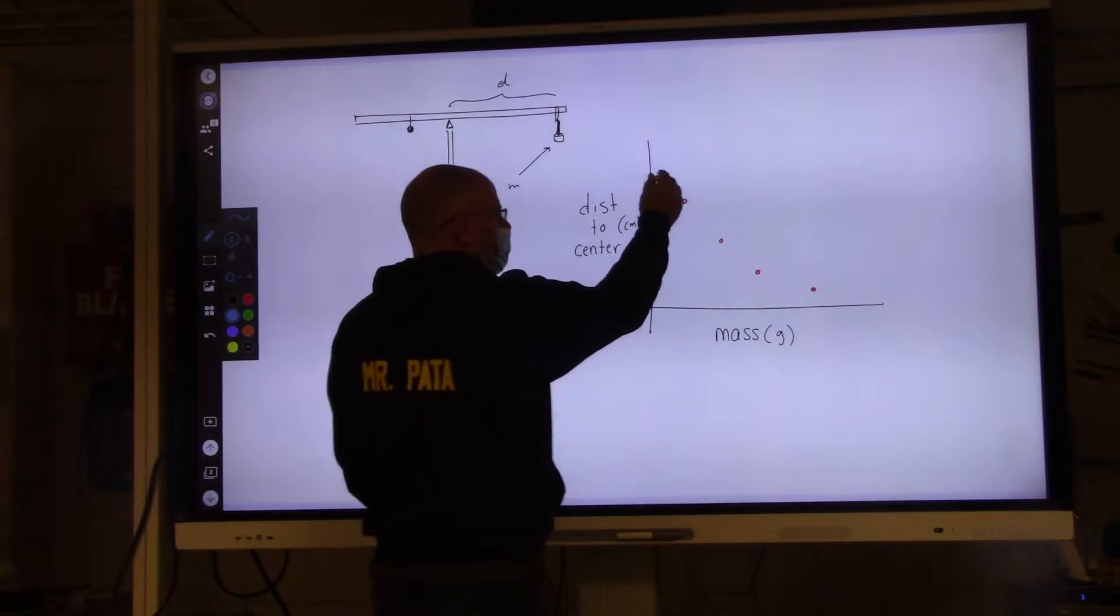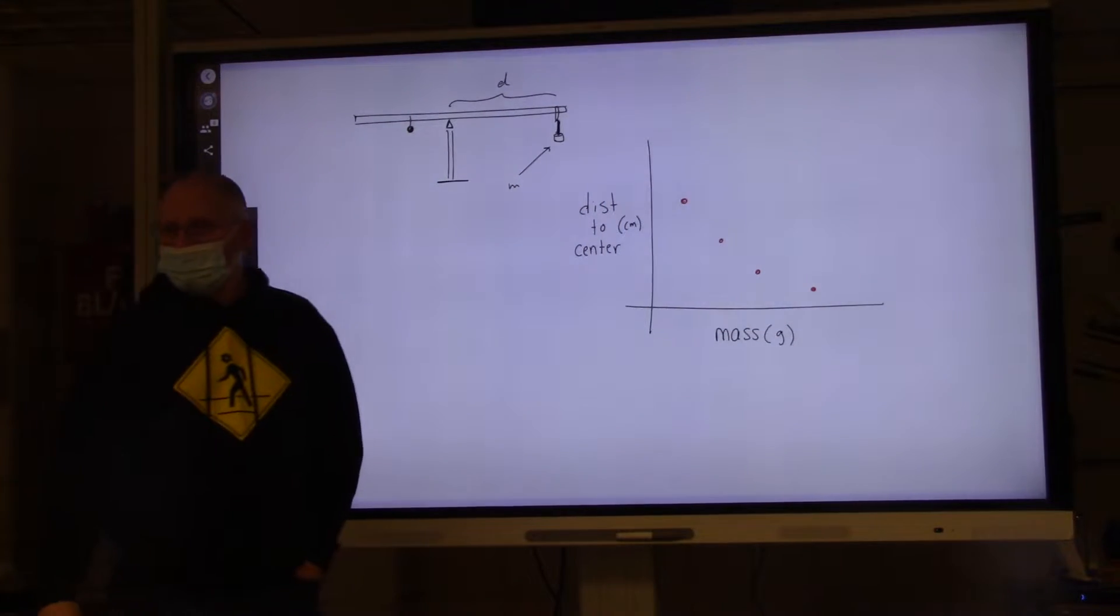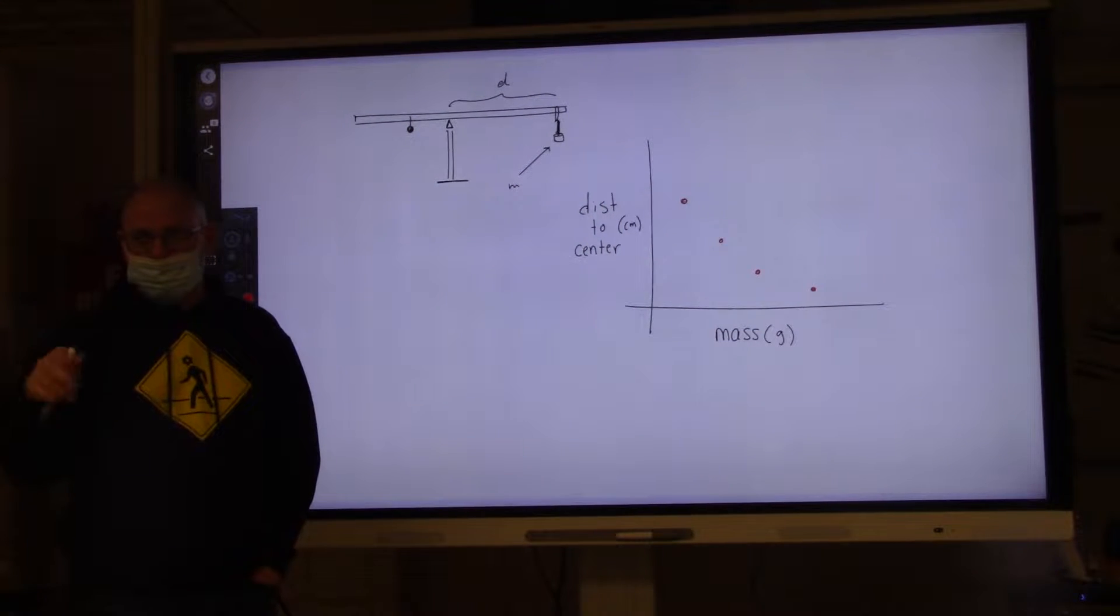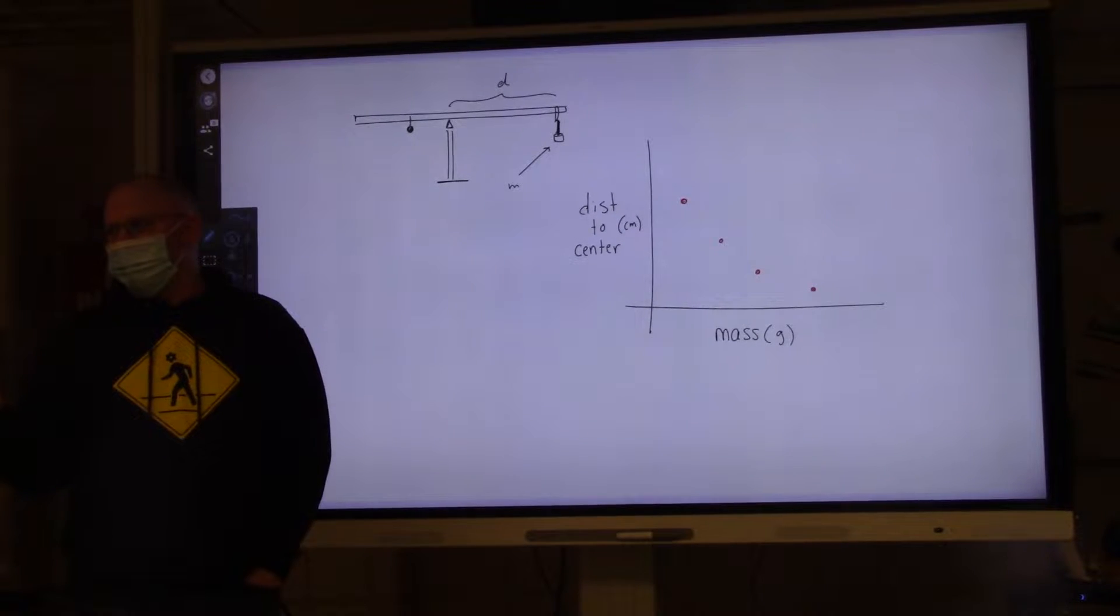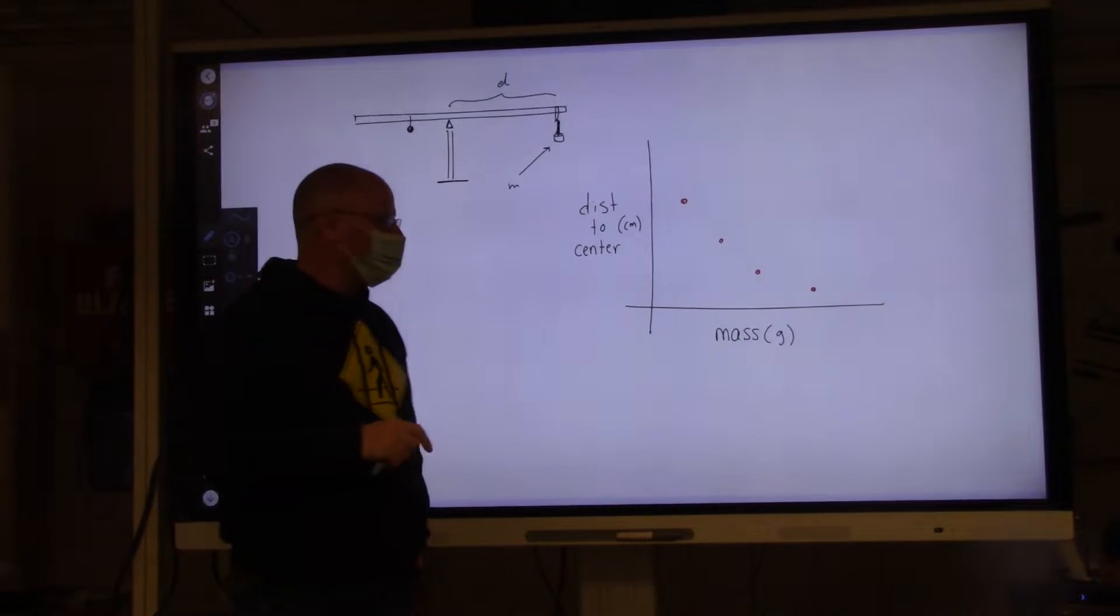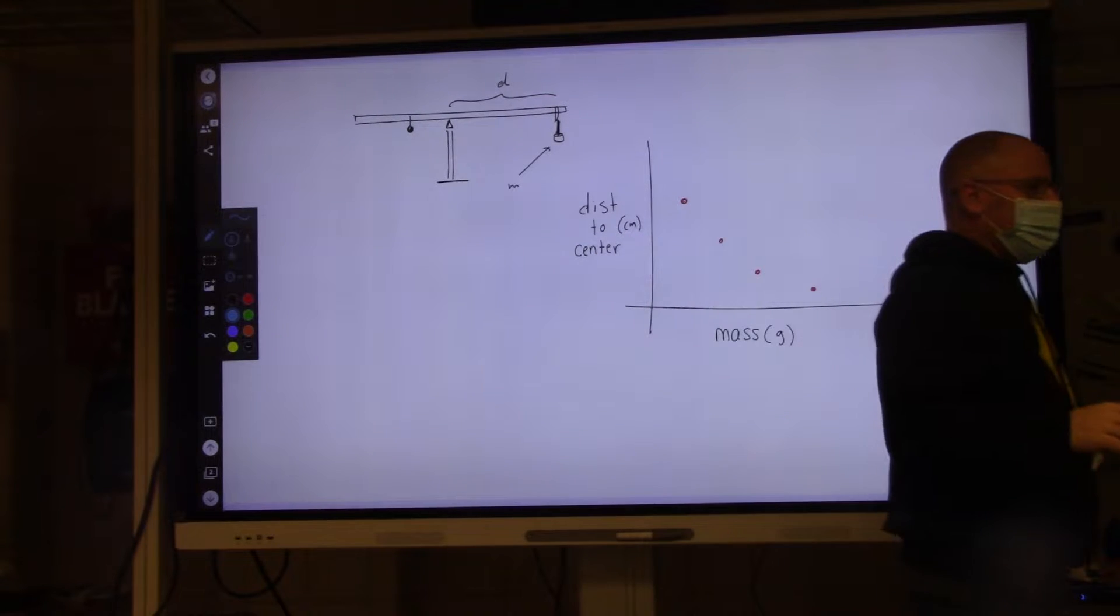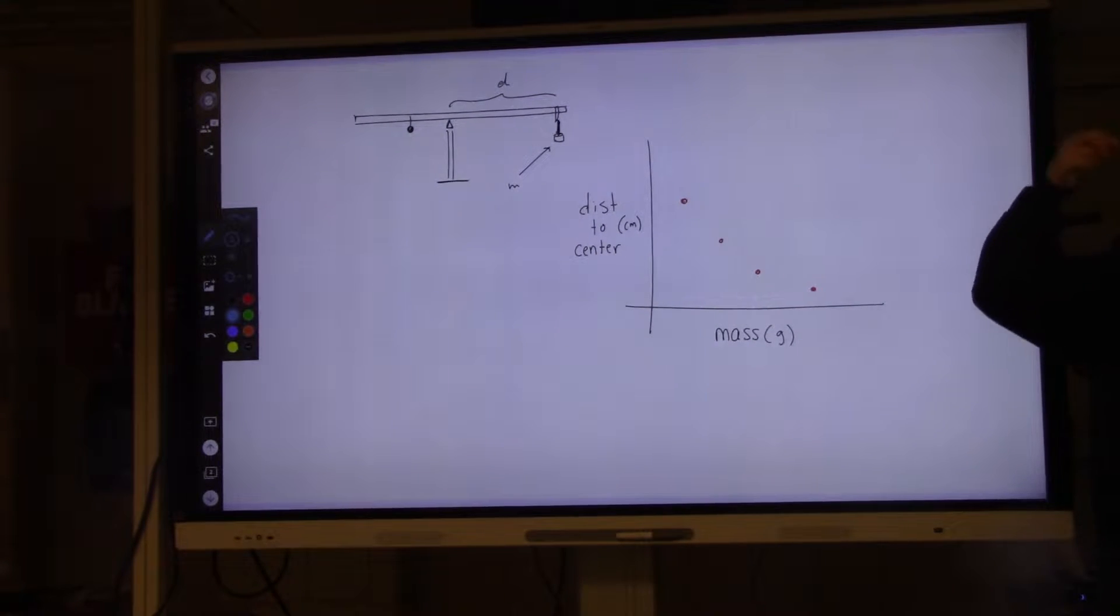Could this be a linear function? No. Why not? Because it's not a line? There's no constant slope. There are two things. One, it itself doesn't look like a line of strength. Two,